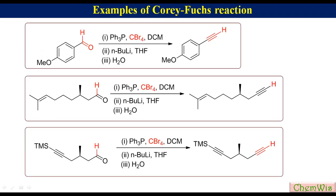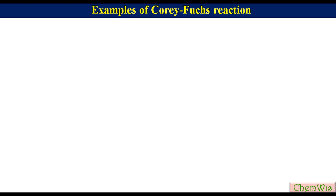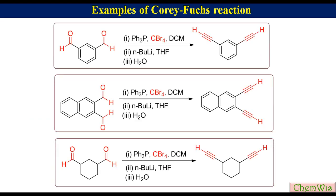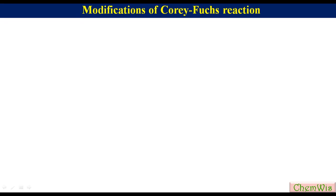These are some examples of the Corey-Fuchs reaction, where we can see that aromatic as well as aliphatic aldehydes have been converted to their corresponding homologous terminal alkynes. We can also convert dialdehydes to diynes. These examples show the conversion of aromatic and aliphatic dialdehydes into corresponding diynes using Corey-Fuchs reaction conditions.